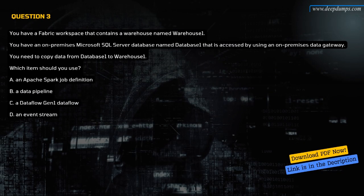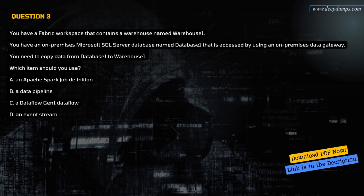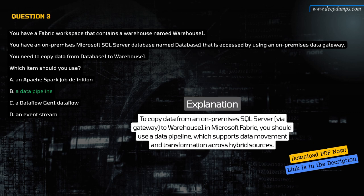Question 3. You have a Fabric workspace that contains a warehouse named Warehouse 1. You have an on-premises Microsoft SQL Server database named Database 1 that is accessed by using an on-premises data gateway. You need to copy data from Database 1 to Warehouse 1. Which item should you use? A. An Apache Spark job definition. B. A data pipeline. C. A data flow Gen 1 data flow. D. An event stream. The correct answer is B. A data pipeline. Data pipelines support connectivity via gateways and handle orchestration to move data between hybrid sources and Fabric destinations.